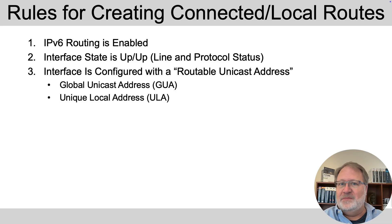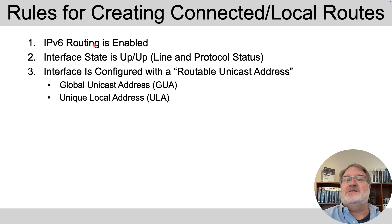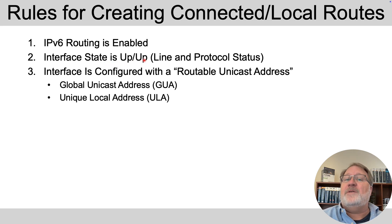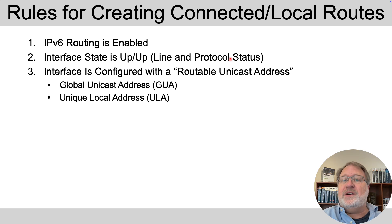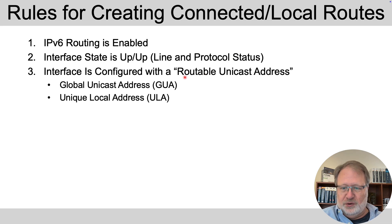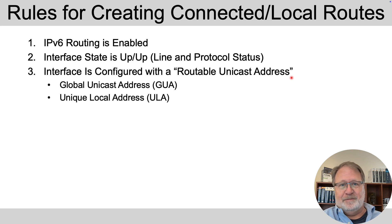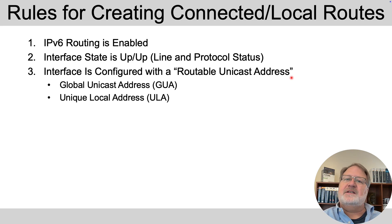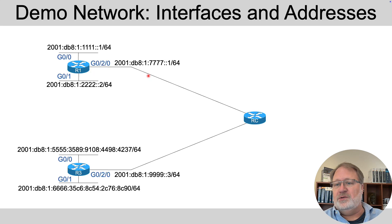Let's talk about the rules to start out. You've got a Cisco router, you've enabled IPv6 routing, you've got some interfaces with cables installed correctly and the interface state is up-up — that is the show interfaces command listing line status up, protocol status up. And then you configure IPv6 addresses on the interface, specifically routable unicast addresses, meaning a global unicast address or a unique local address. If all those things are true, the router reacts and creates connected routes for the subnets calculated based on those routable unicast addresses.